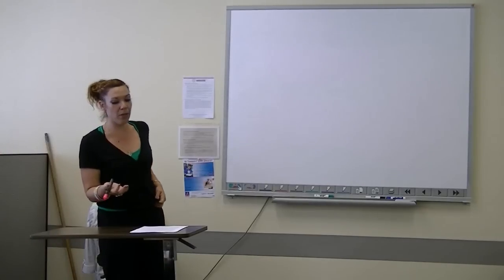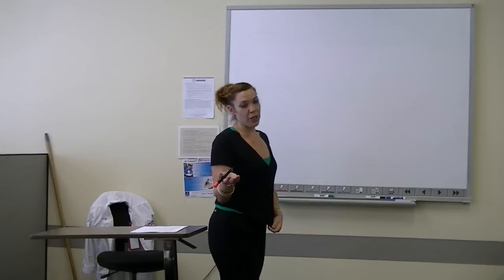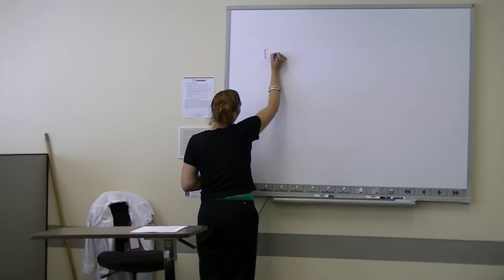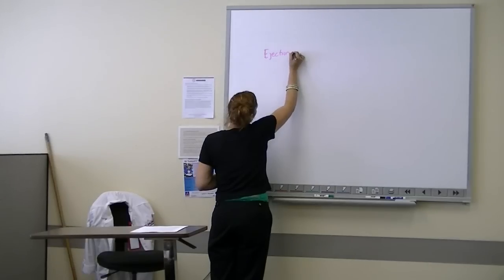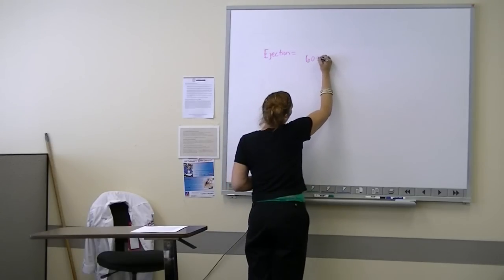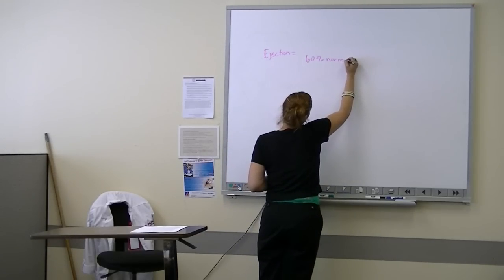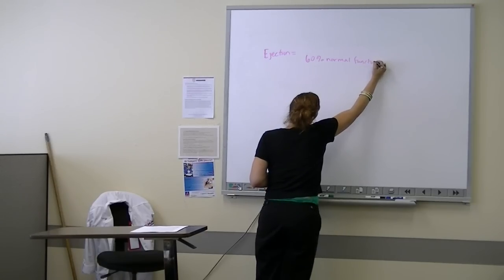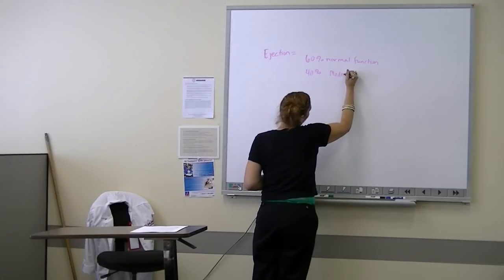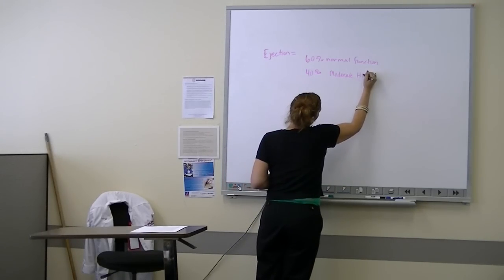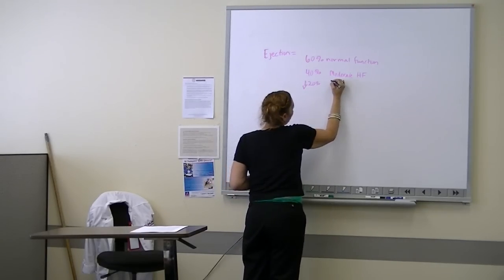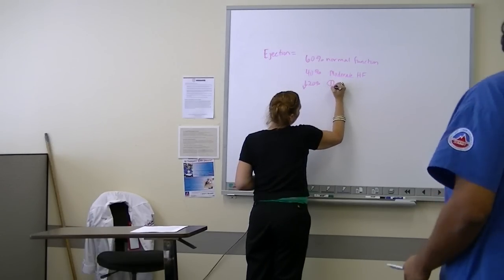First bullet: what is ejection fraction? Ejection fraction, we kind of covered it already. This is the amount of blood that gets pushed out. 60% is normal function. The moment we hit 40%, we're already in moderate heart failure.